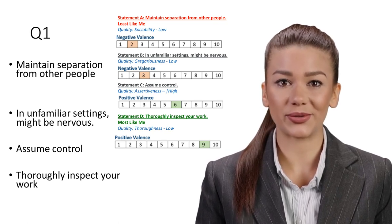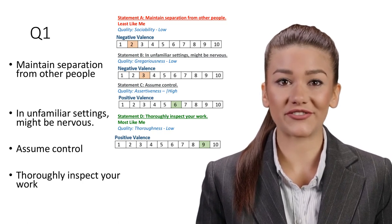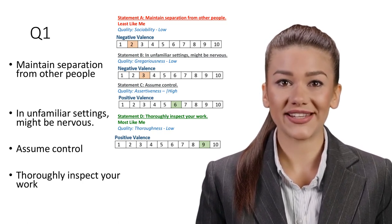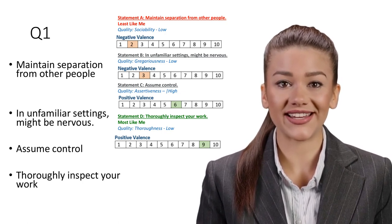Statement C: Assume control. Quality: Assertiveness high. Even junior staff should feel comfortable taking the lead when necessary. Similarly, mentor and lead colleagues as needed to achieve project success.